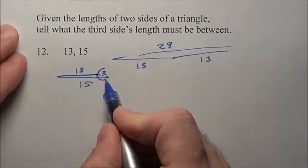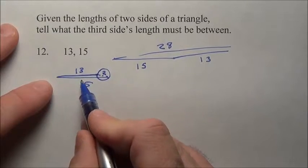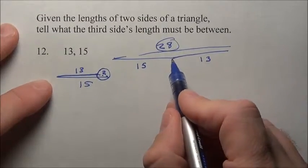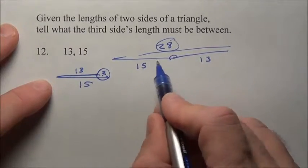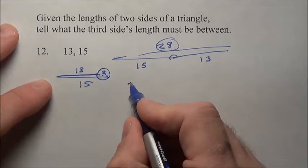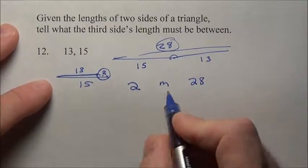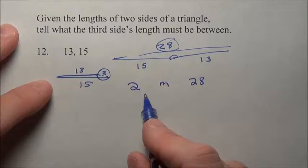So you can see two is as small as we're going to be able to get it if we put the 13 flat down on the 15, and 28 is as large as we can get if we create a huge angle between the 13 and 15. The answer is somewhere between 2 and 28, and the measurement is somewhere in the middle between these two.